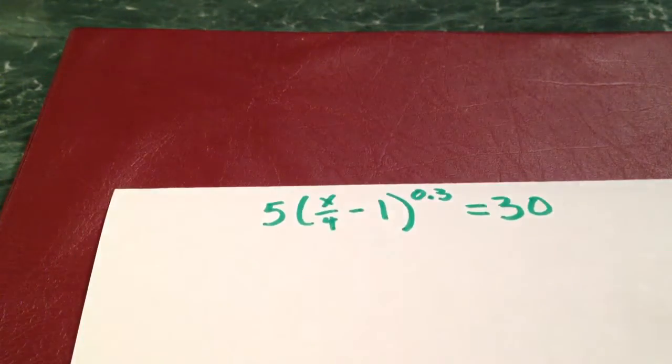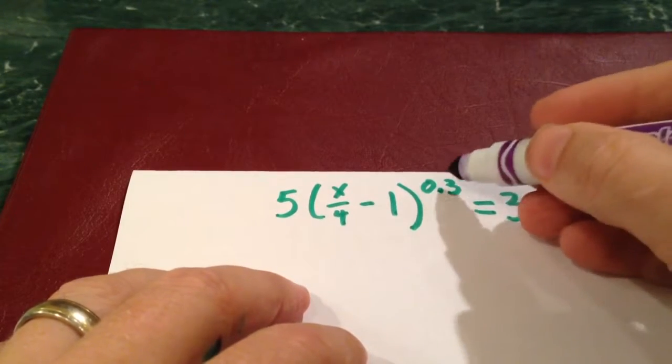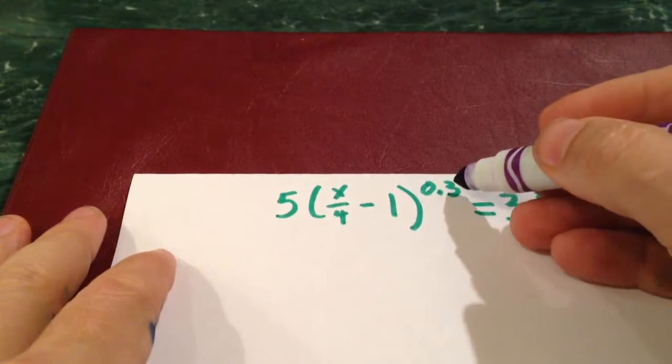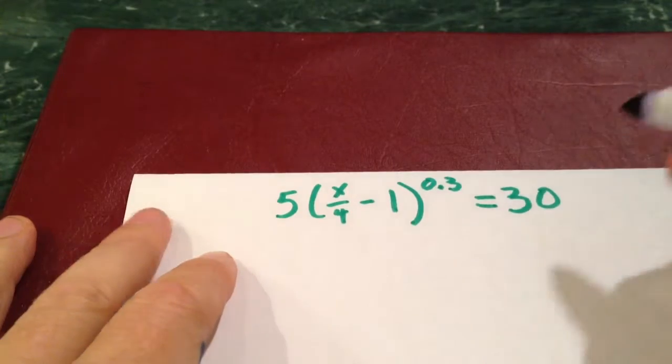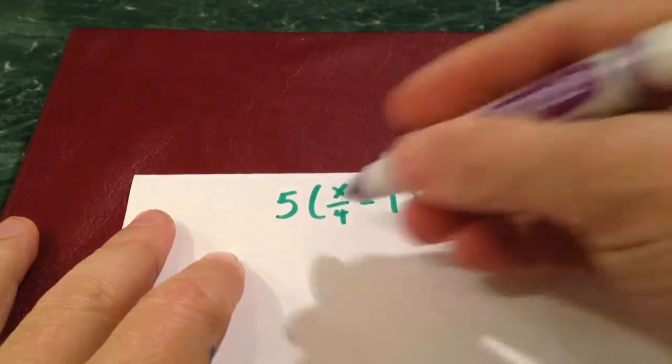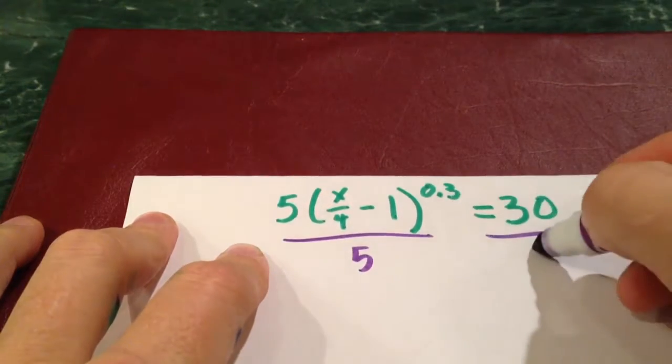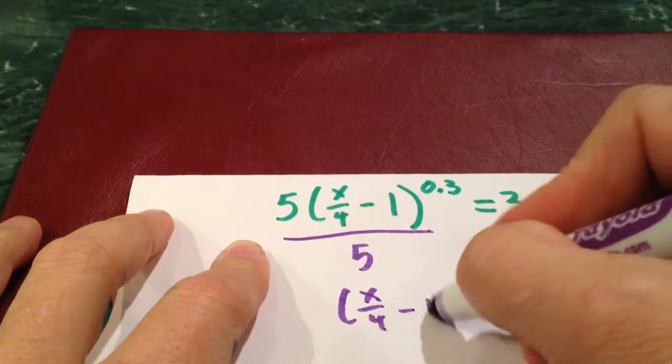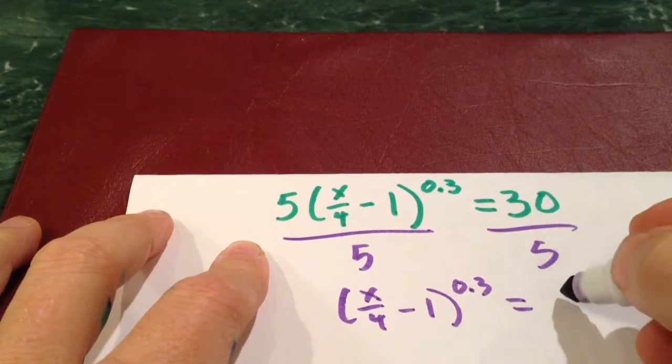Last one. This one right here. Point 3, I could rewrite that as 3 tenths and then flip it, but I'm going to show you another way to do this. This is 3 tenths, so I could raise both sides to 10 thirds, but I'm just going to leave it like that. Nothing to add or subtract, but I do have something I've got to divide. So I'm going to divide both sides by 5.